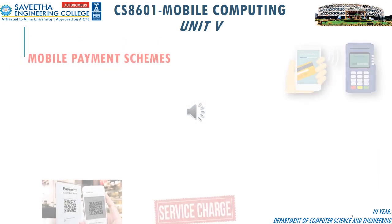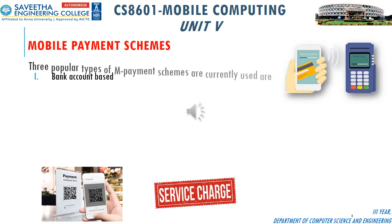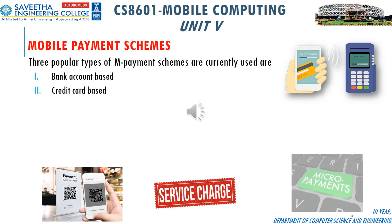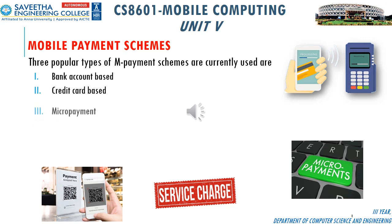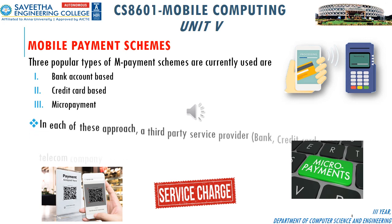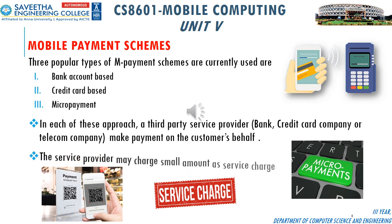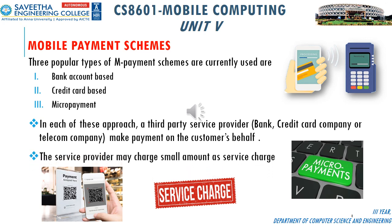Three popular types of m-payment schemes currently used are bank account-based, credit card-based, and micro payment. In each of these approaches, a third-party service provider like a bank, credit card company, or telecom company makes payment on the customer's behalf. The service provider may charge a small amount as a service charge.